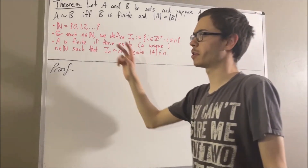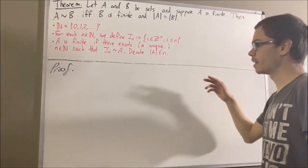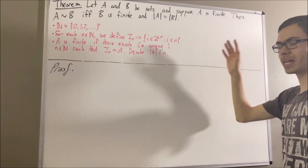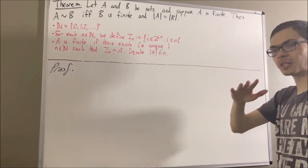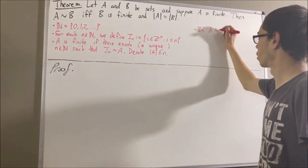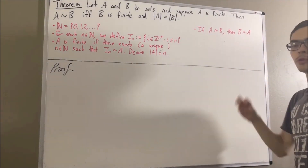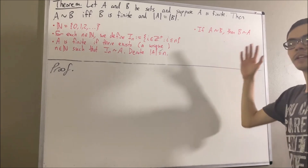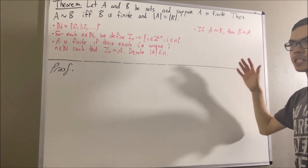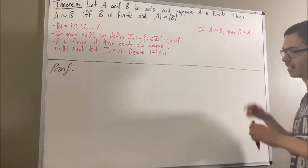I would like to list two properties involving bijections. Given any two sets A and B, if there exists a bijection from A to B, then there exists a bijection from B to A. And given three sets A, B, and C, if there exists a bijection from A to B, and there exists a bijection from B to C, then there exists a bijection from A to C.